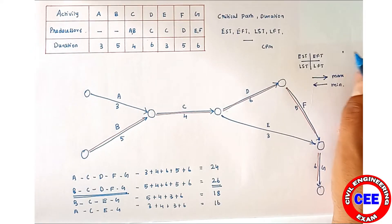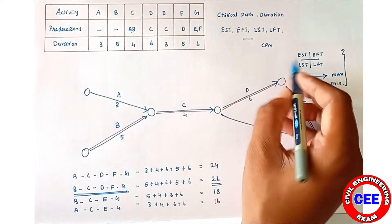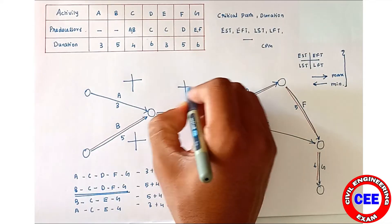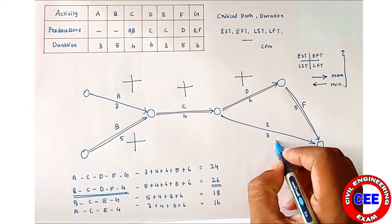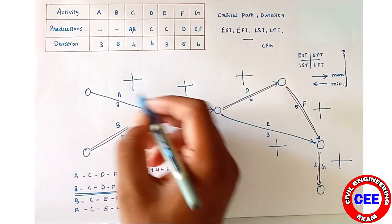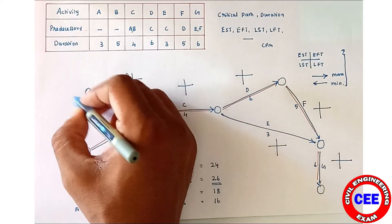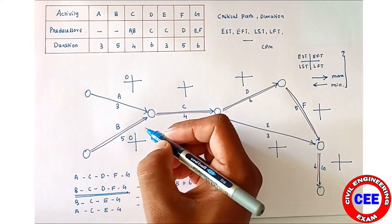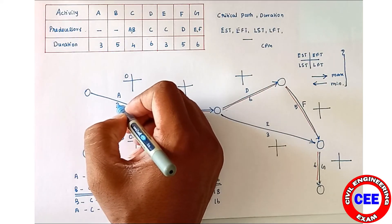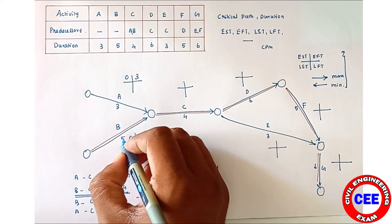We can put the plus mark on every activity — for A, B, C, D, E, F, and G. Since there is no predecessor activity for A and B, we put EST = 0 for both. The earliest finish time for A is 0 + 3 = 3, and for B it is 0 + 5 = 5.